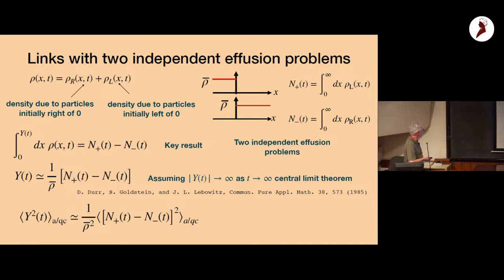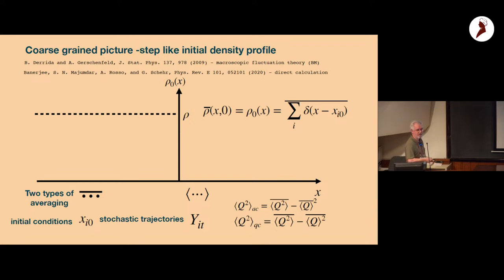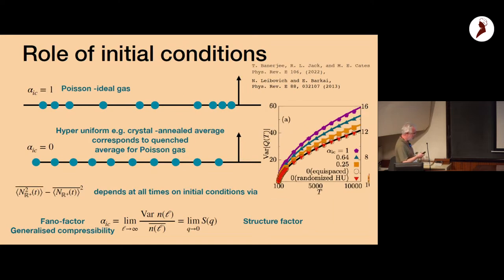This effusion problem was studied by Derrida, Gerschenfeld, and Majumdar. You have a one-sided density field evolving from a step function, as an average over delta functions at initial particle positions. There are still two types of averaging: disorder averaging over the initial positions xᵢ⁰, and thermal averaging over the stochastic increments once time starts. These give the annealed and quenched averages respectively.